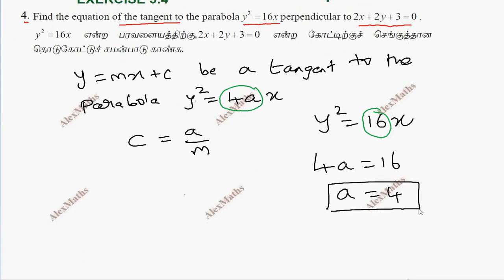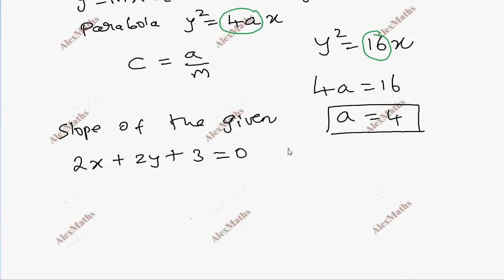Find the slope of the given line. The given line is 2x plus 2y plus 3 equal to 0.